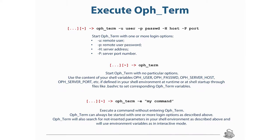If you want to enter the Ophelia terminal, you have to use the statement oph_term, dash u with your username, dash p with your password, dash capital H with your server host IP, and dash capital P with the related port to connect to. You can also launch the oph_term command directly without specifying any of these parameters, because you can rely on shell variables — OPH_USER, OPH_PASSWORD — which you can define inside your shell environment to avoid typing all these parameters every time.